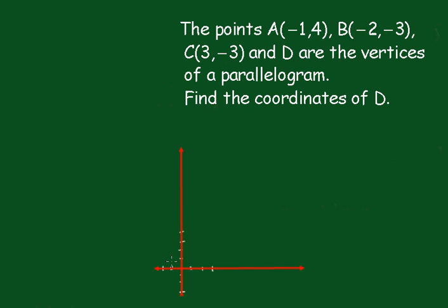A is the point (-1,4), there's A. B is the point (-2,-3), minus 2, minus 3 there. That's B. And C is (3,-3), 3, minus 3.